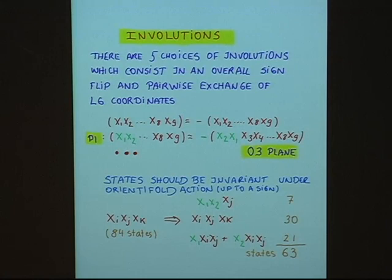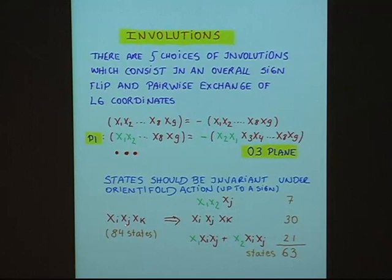The orientifold action we are interested in is the second one, which gives us O3-plane charge. States should be invariant under this orientifold action. Out of the 84 states corresponding to the (2,1)-forms, we can construct invariant combinations: X₁ and X₂ appearing together, combinations not containing X₁ and X₂ at all, or mixed combinations. Out of the 84 states, we are left with 63 states after orientifolding.